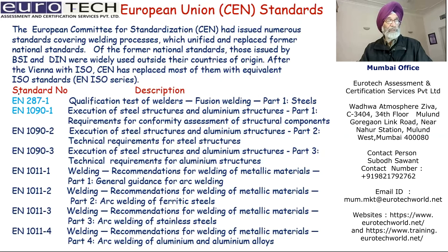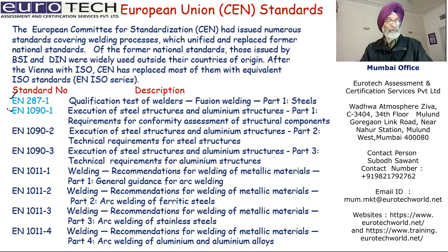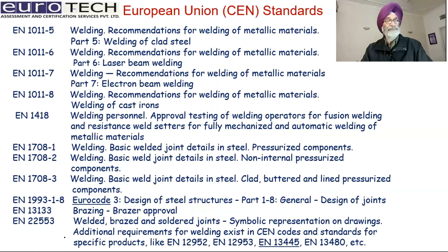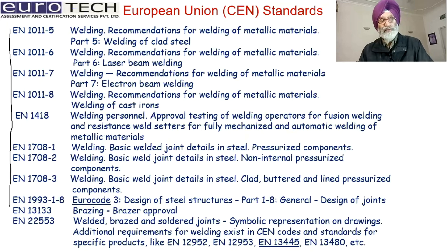Coming to European Union standards, we will just highlight two: EN 287-1, which is basically the qualification test of welders for fusion welding; and the second covers the execution of steel and aluminum structures. The rest of the EU standards list is comprehensive but is used primarily by European Union countries and Britain.